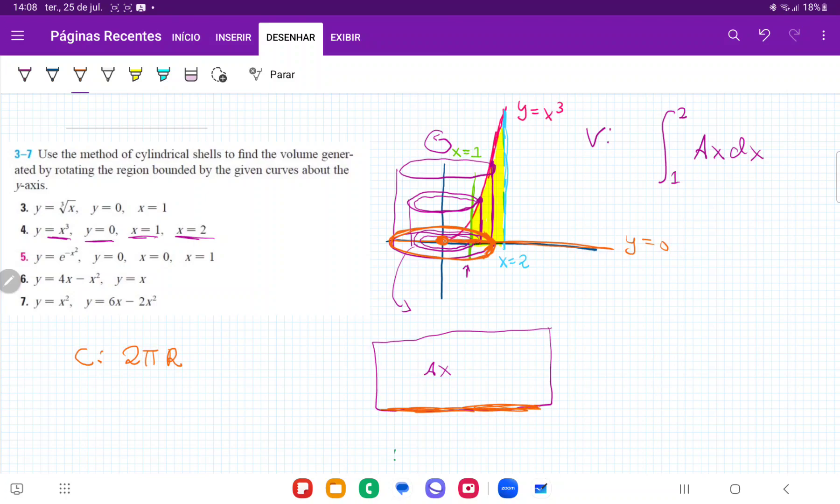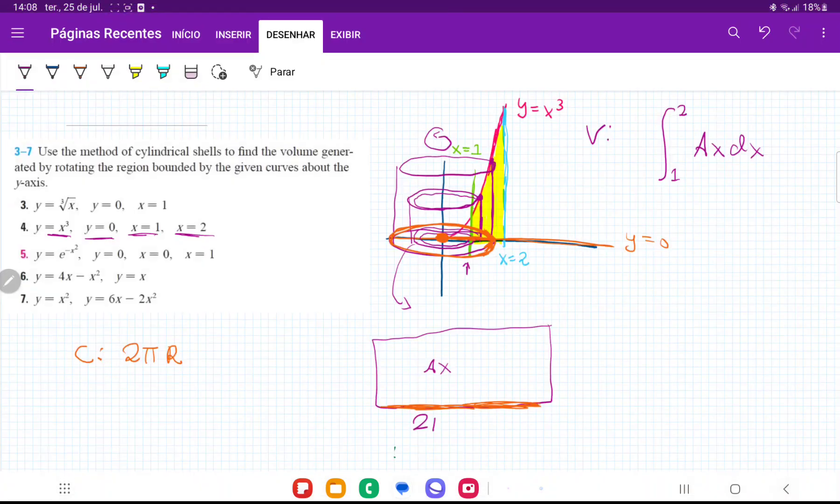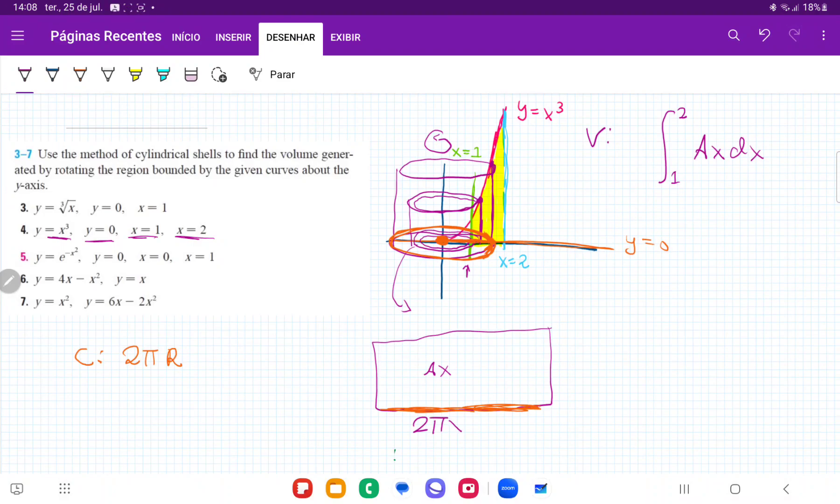If I'm closer to the origin, my radius is going to be smaller. So it's just the value of x. Therefore, this base is 2π x.